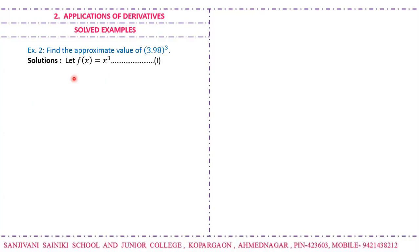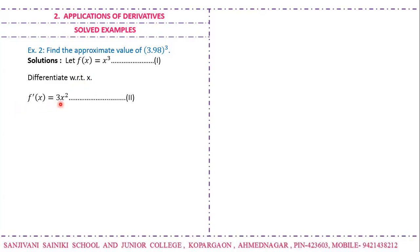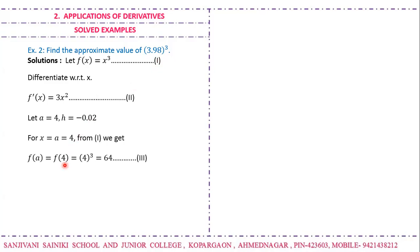The next example: find the approximate value of (3.98)³. We choose the function f(x) = x³. Differentiating, f'(x) = 3x². We take a = 4 and h = −0.02, so that a + h = 3.98.